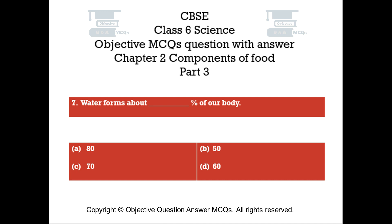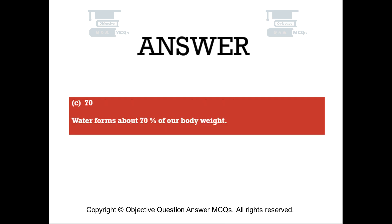Question number 7: Water forms about how many percent of our body? Option A: 80. Option B: 50. Option C: 70. Option D: 60. The right answer is Option C — 70. Water forms about 70% of our body weight.